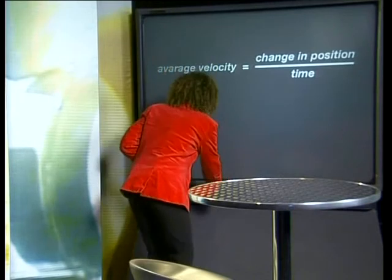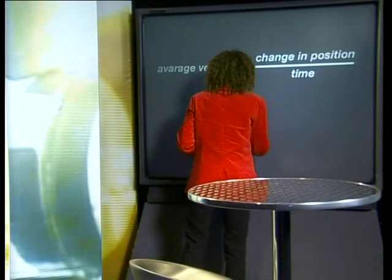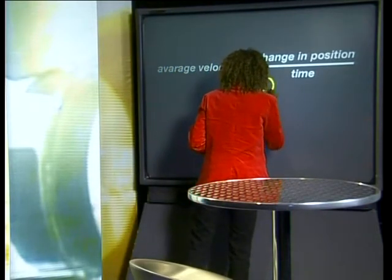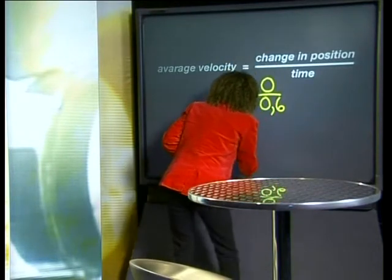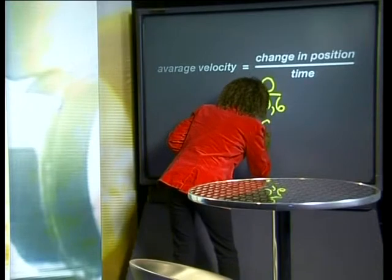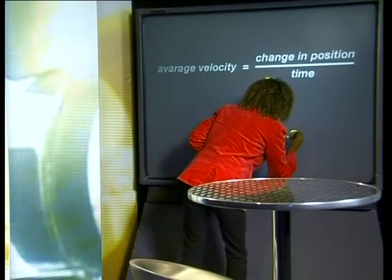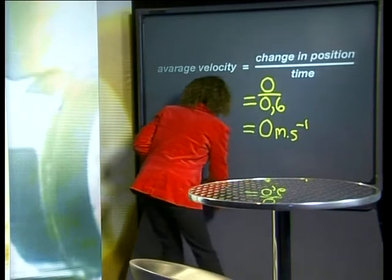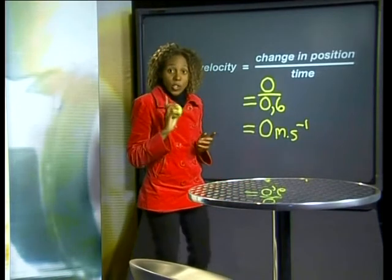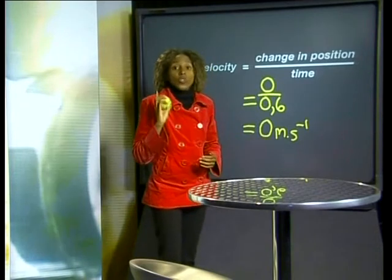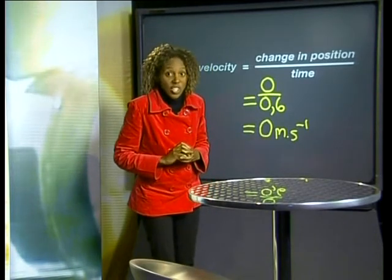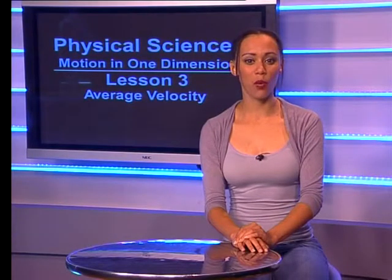Let's do the sum. Our answer, of course, is 0 meters per second. Notice, because the velocity is 0, we do not have to include direction in this answer. Isn't it surprising that the bouncing ball has an average velocity of 0?